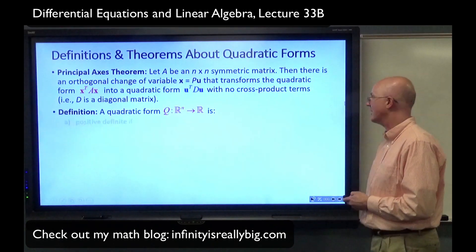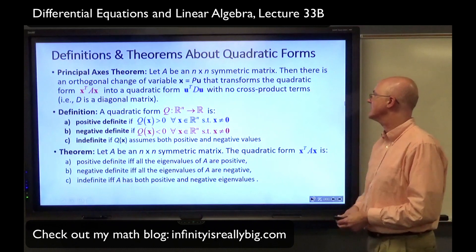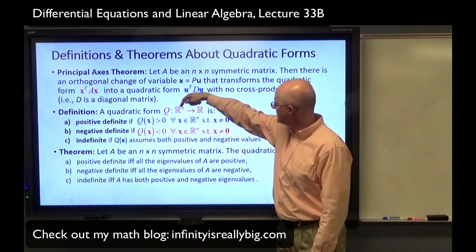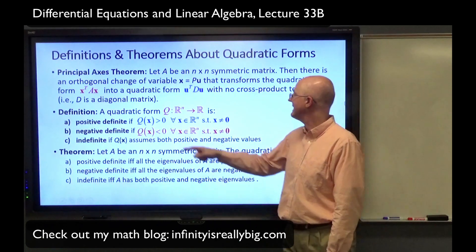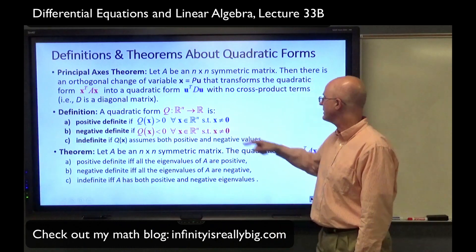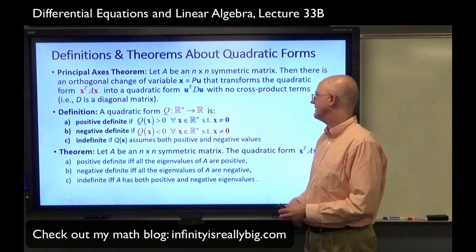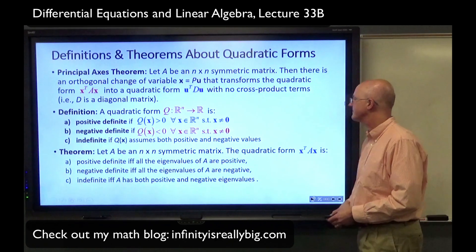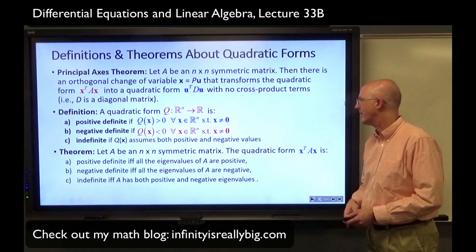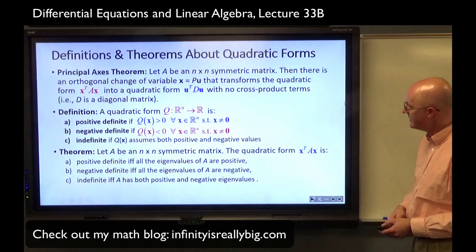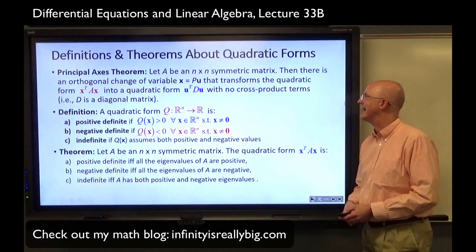The definition says a quadratic form, which is a function from R^n into R, is positive definite if it's always positive when the input is non-zero. It's negative definite if the output is always negative when the input is non-zero. When the input equals zero, the outputs are zero. It's indefinite if Q of X assumes both positive and negative values. This theorem characterizes the nature in terms of the eigenvalues: positive definite if and only if all eigenvalues are positive, negative definite if all are negative, and indefinite if there's a combination of both.